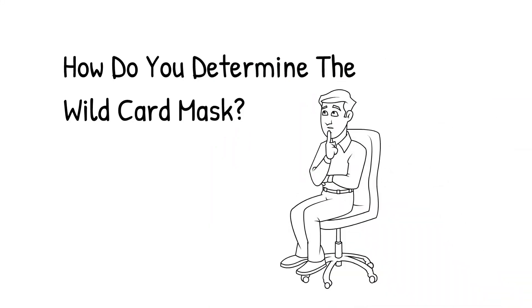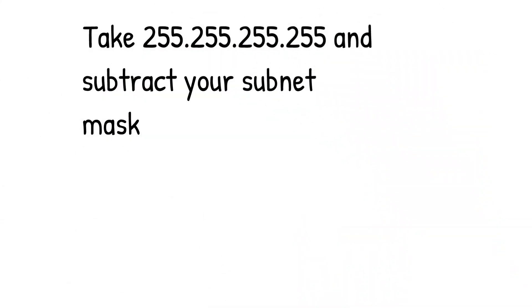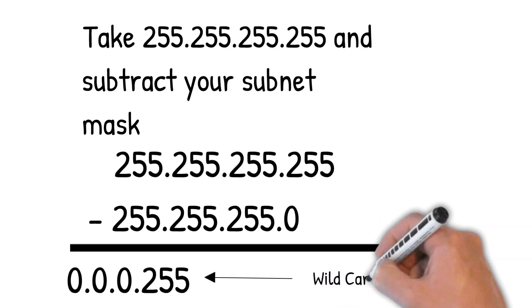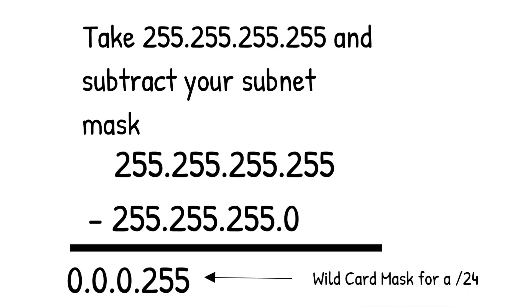Every subnet mask has a corresponding wildcard mask. If technologies like access control lists use wildcard masks instead of subnet masks, how do you determine which wildcard mask to use? It's simple: take your subnet mask and subtract it from all 255s — that is, 255.255.255.255. For example, if you use the default mask for a Class C, which is 255.255.255.0, subtracting it from 255.255.255.255 gives you a wildcard mask of 0.0.0.255. That's how you convert any subnet mask into a wildcard mask.